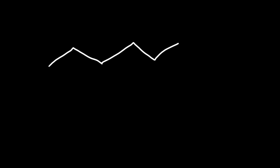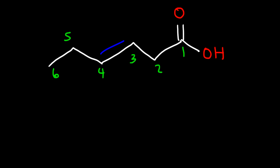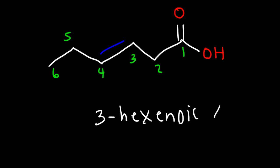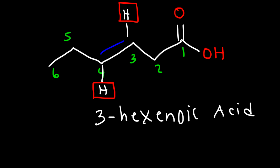Now let's move on to our next example. This time we're going to have an alkene functional group with a carboxylic acid. So this is going to be carbon 1, 2, 3, 4, 5, 6. We have the alkene on carbon 3 and the carboxylic acid on carbon 1. So this is going to be 3-hexenoic acid. Now notice the hydrogen atoms are opposite to each other, so we have the trans isomer as opposed to the cis isomer. So this is trans-3-hexenoic acid.